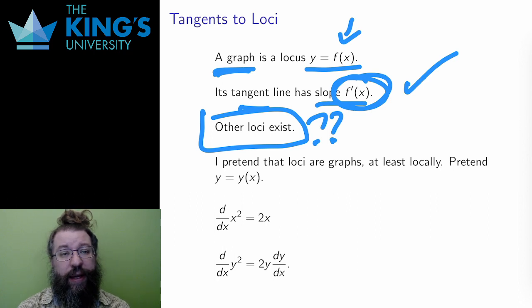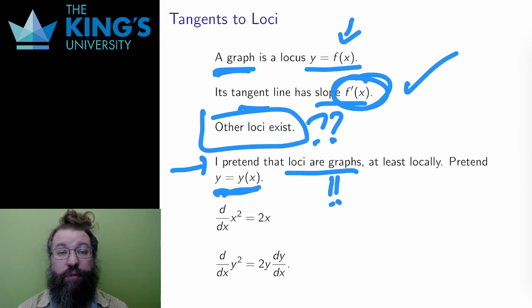I know how to calculate the slope for graphs of functions, the derivative. A common trick in mathematics, which sometimes works, is to pretend the problem is already like a problem I know how to solve, and that's going to work here. I'm just going to pretend that for some locus, y is a function of x. The locus is the graph of a function.